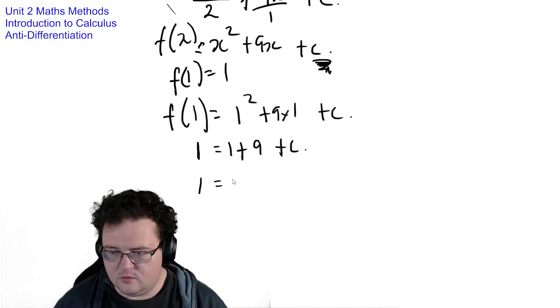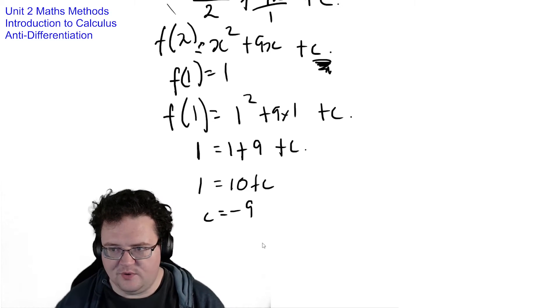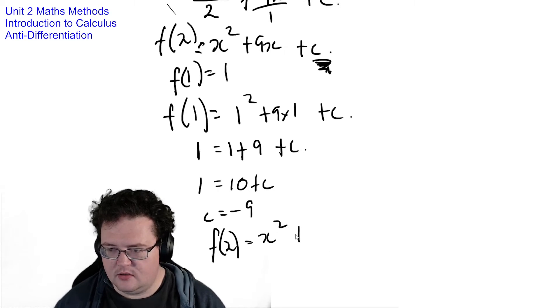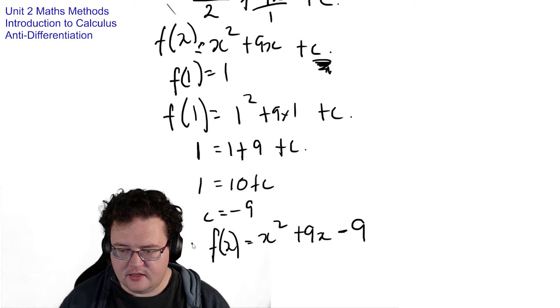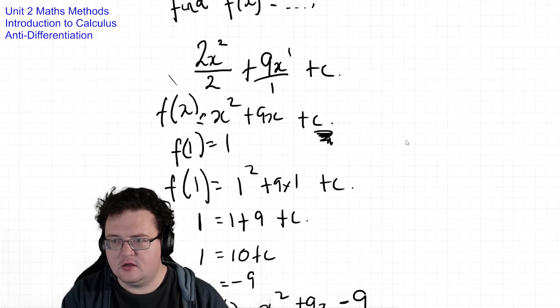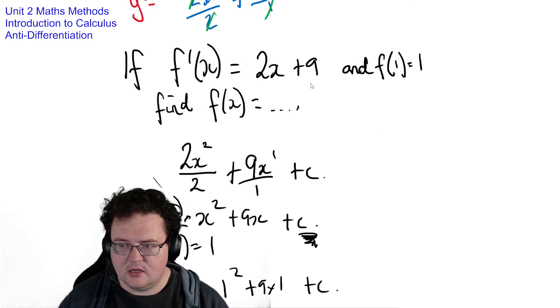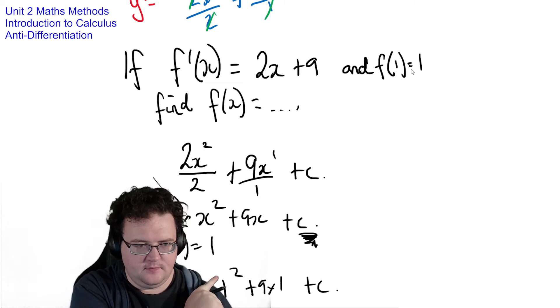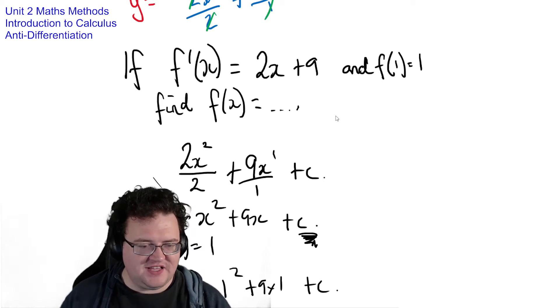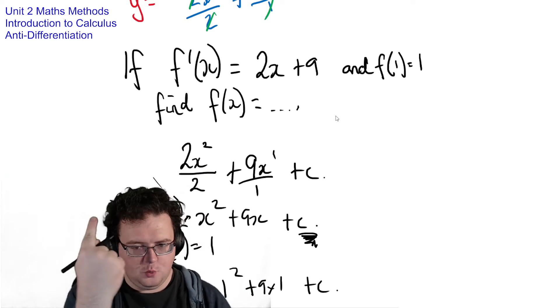And then I'm going to solve for c. So 1 equals 10 plus c, c equals minus 9. And since c equals minus 9 we can now go back and write the full equation: f of x equals x squared plus 9x minus 9. So what I've created here is an equation that has a derivative of this while also meeting this particular requirement. Only one equation is going to have both of those things.